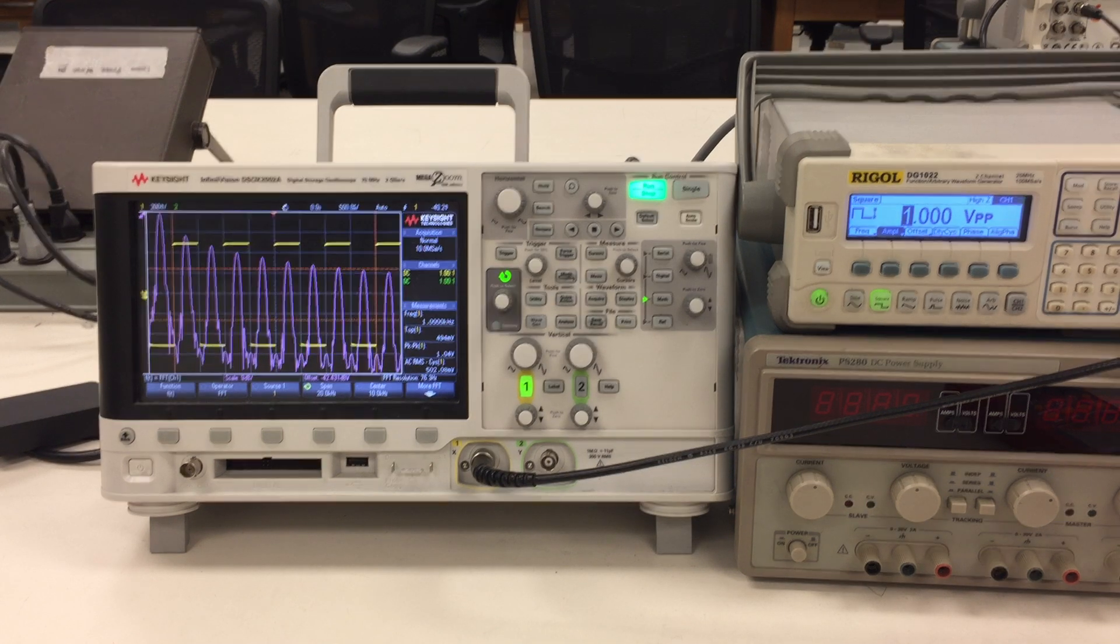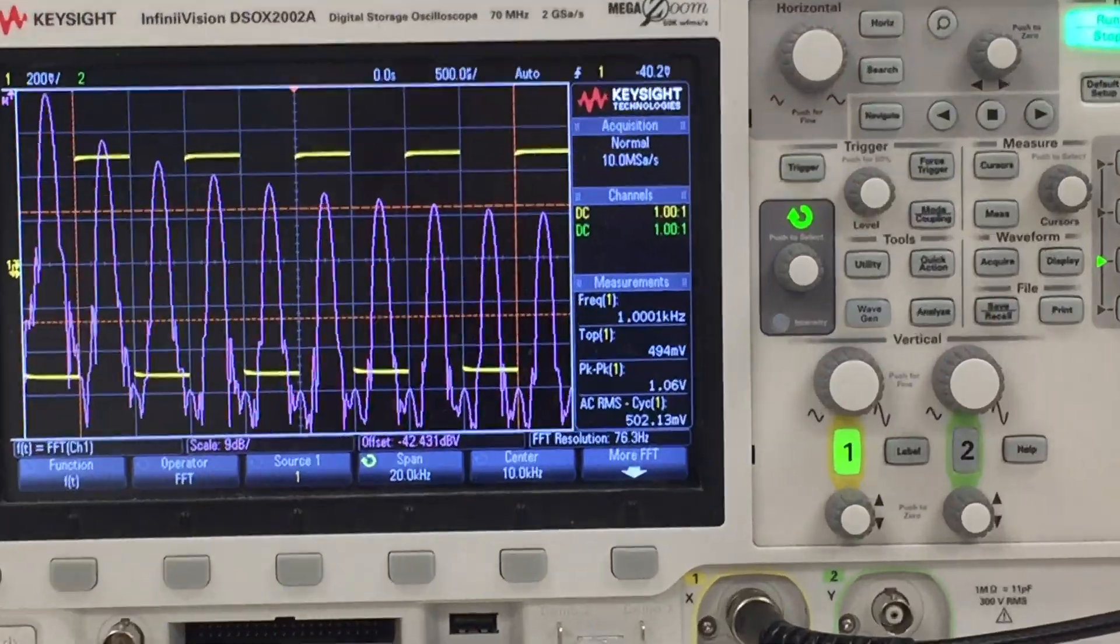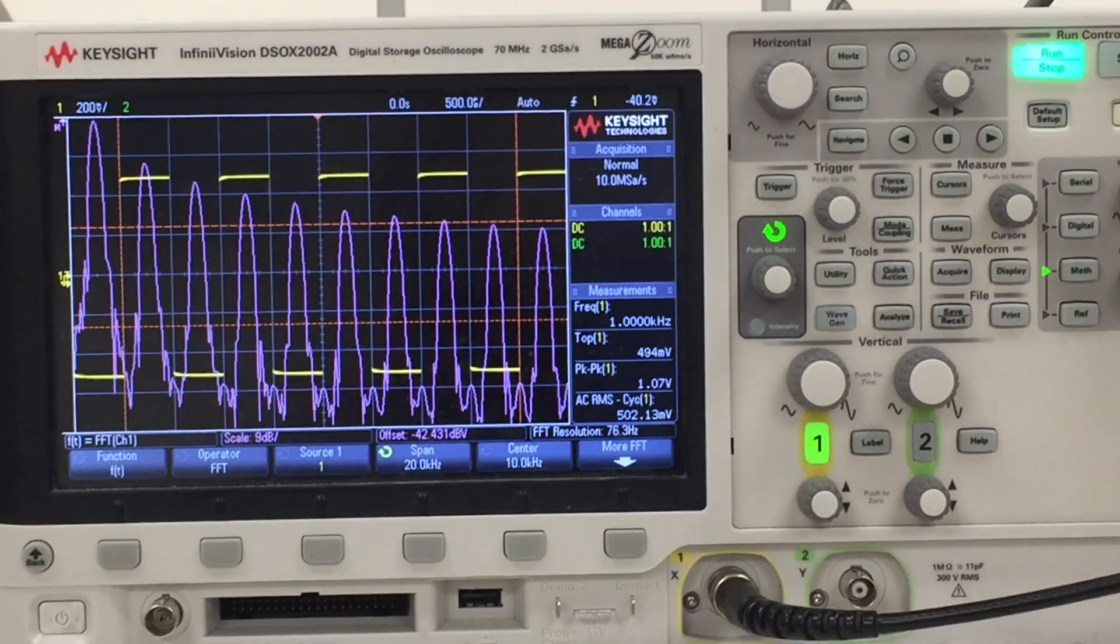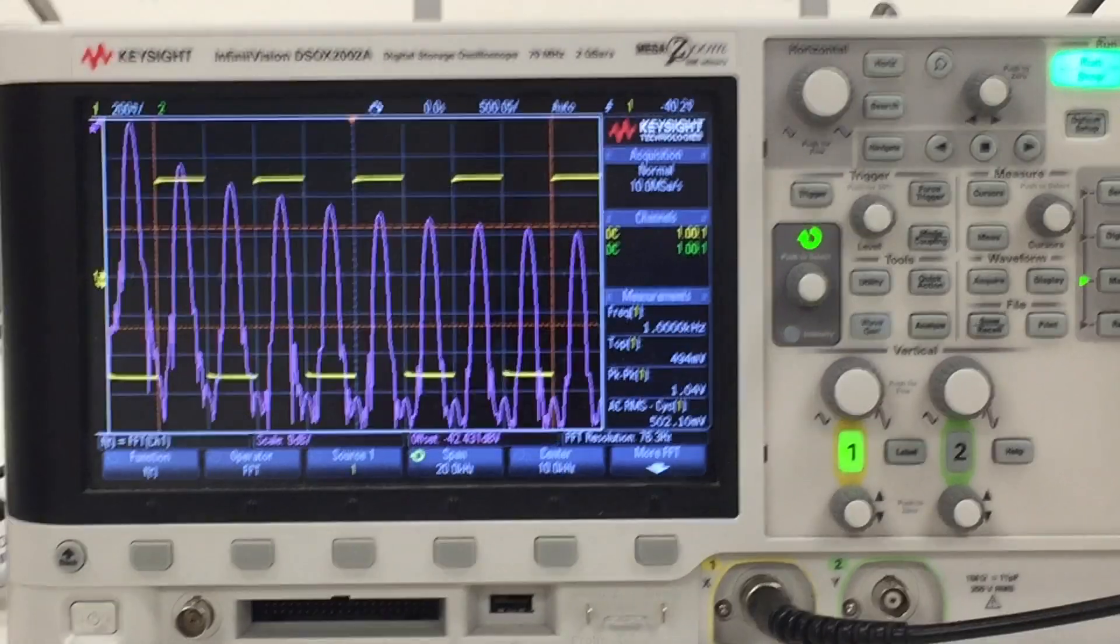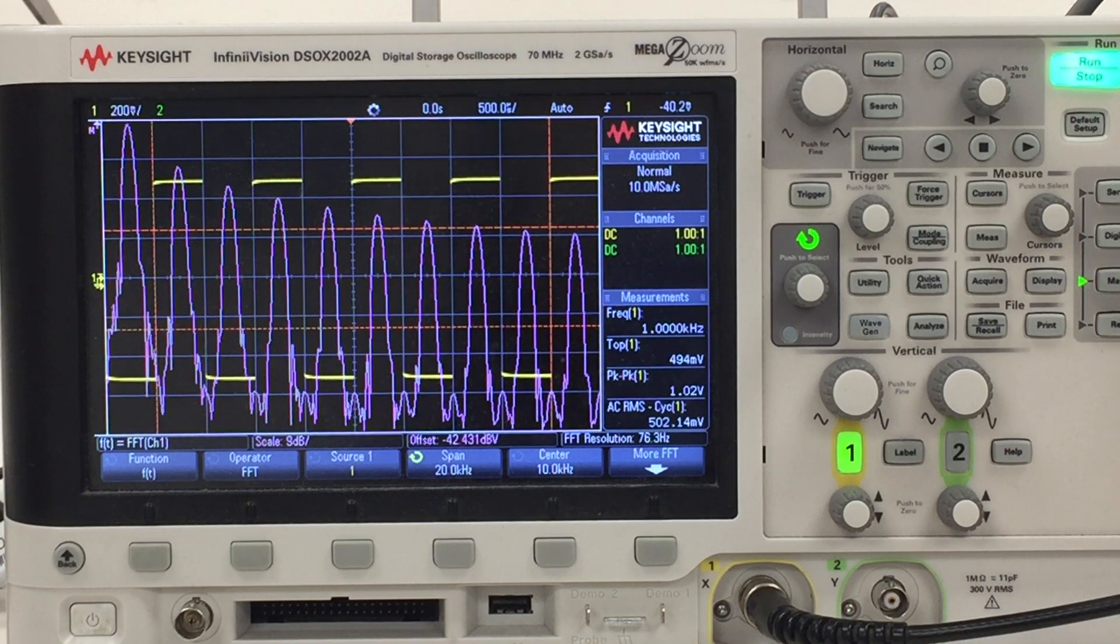So the way we're doing this is we can use the cursor function to help us read the frequency of each of these peaks, as well as the difference between these peaks, different peaks.